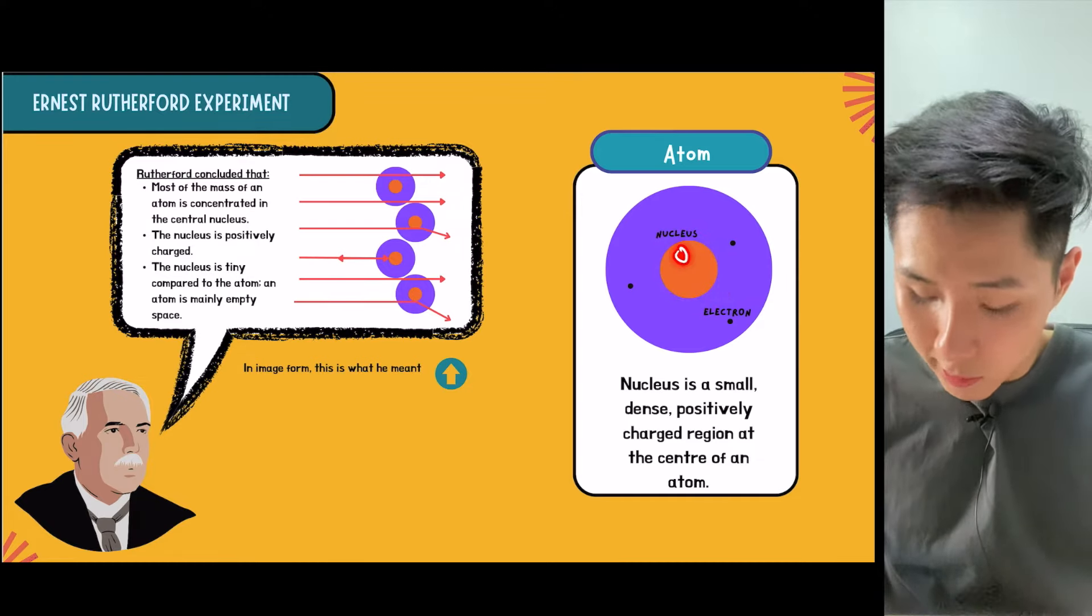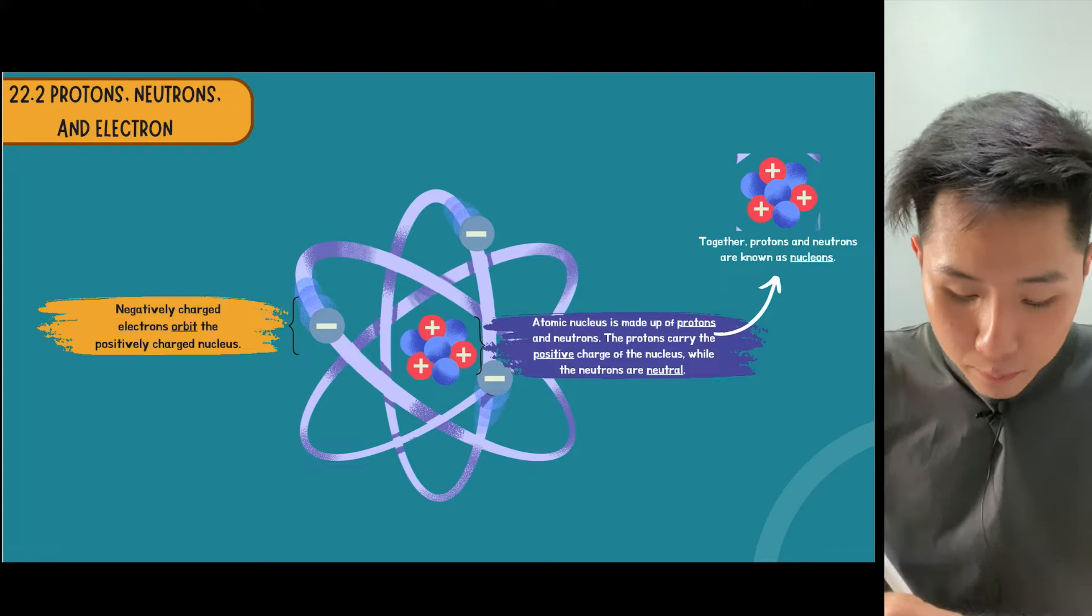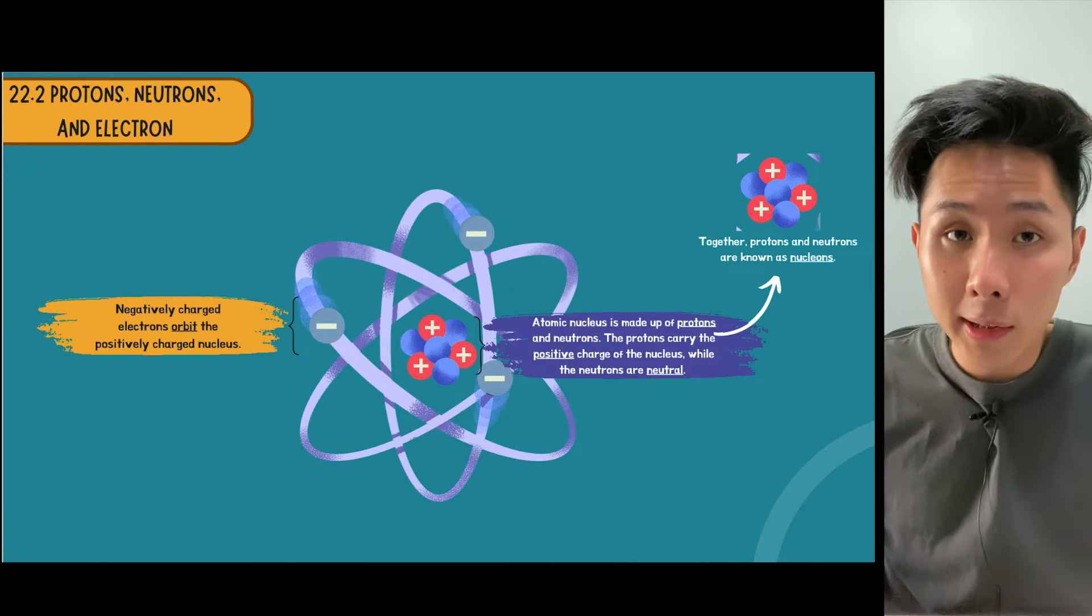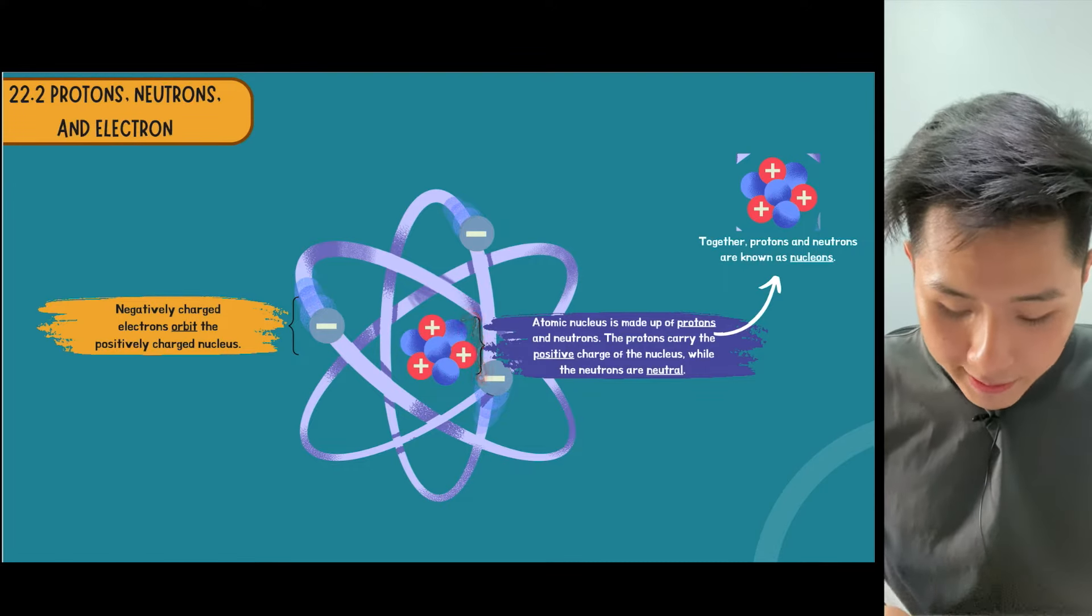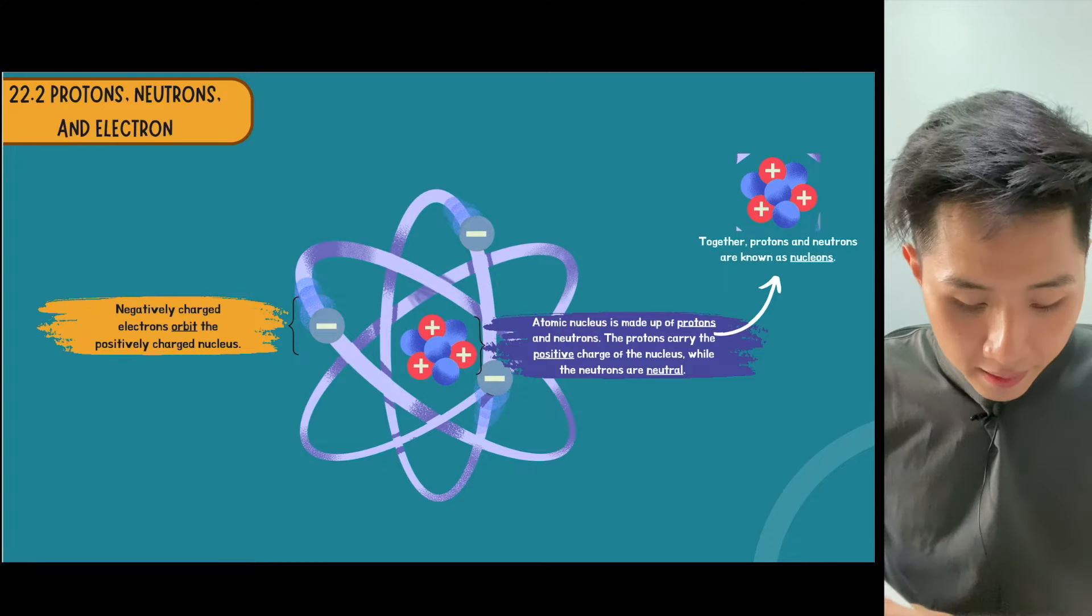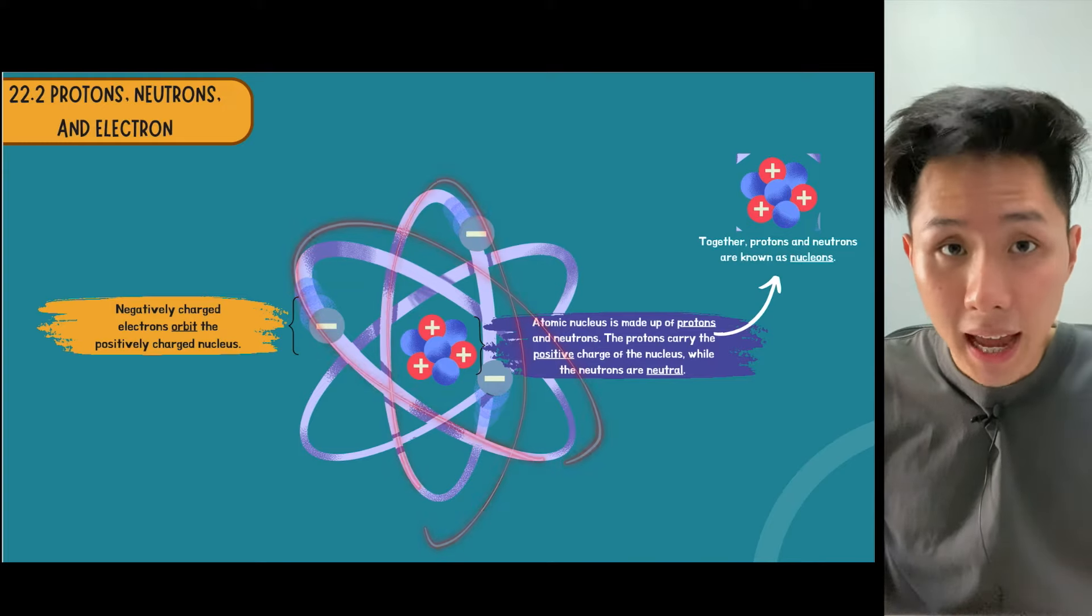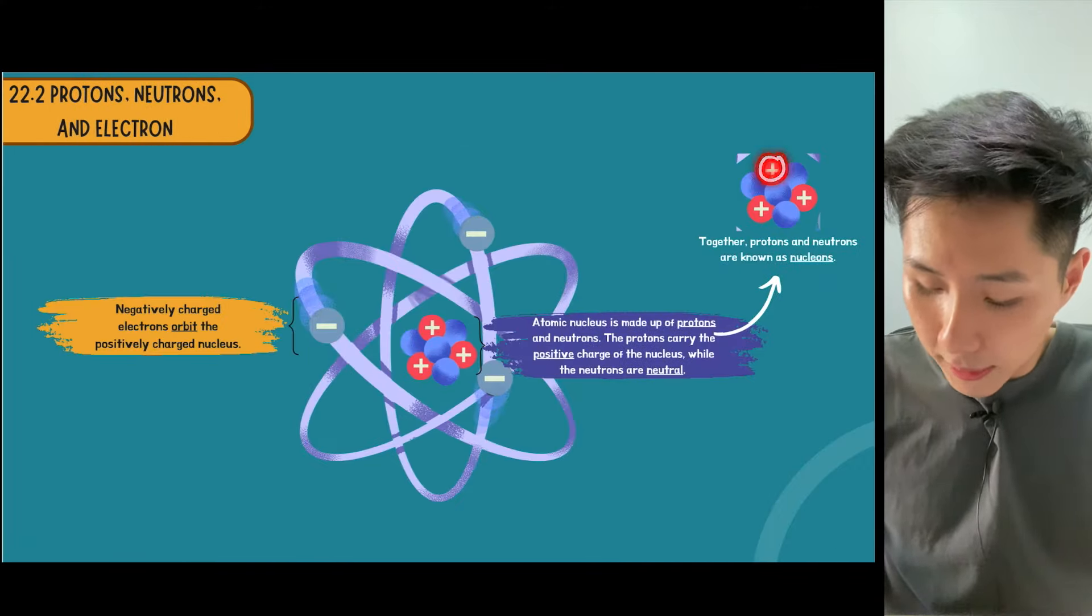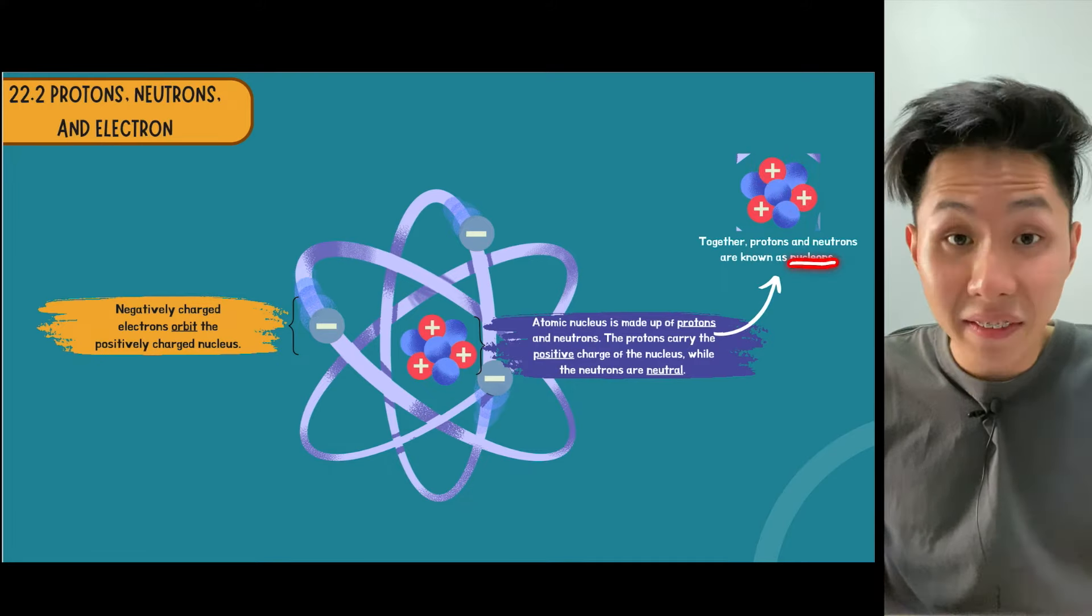They consist of proton and neutron. Now that we've proved that the structure of an atom follows the solar system model, we will investigate further. In the center of the atom is the nucleus with protons and neutrons, and the electrons surround the atom. If you put together proton and neutron, they are known as nucleons.